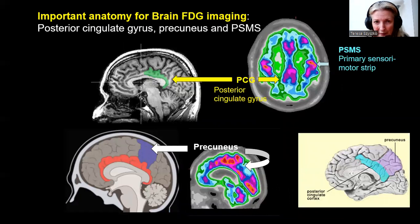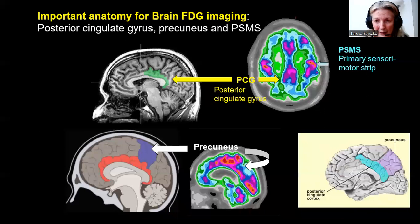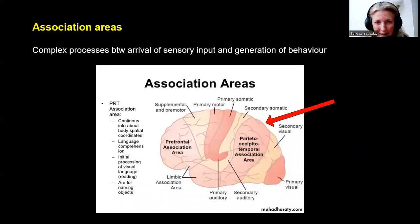Important anatomical regions we've already learned are the posterior cingulate gyri and the precuneus. We also have the primary sensory motor strip, where uptake decreases in normal ageing but tends to be preserved in dementias. Another important area is the parietotemporal association area, which features heavily in Alzheimer's disease.